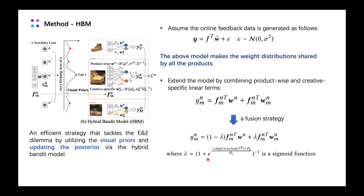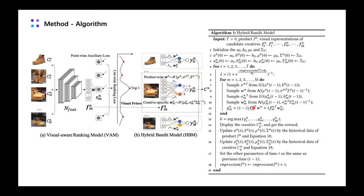Furthermore, we propose a fusion strategy to adaptively combine these two terms instead of simple addition, where lambda is a sigmoid function. We found that when impressions are inadequate, the product-wise parameters are learned better because they make use of knowledge among all candidate creatives. Otherwise, the creative-specific term outperforms the shared one due to sufficient feedback observations. This is the overall framework and algorithm.